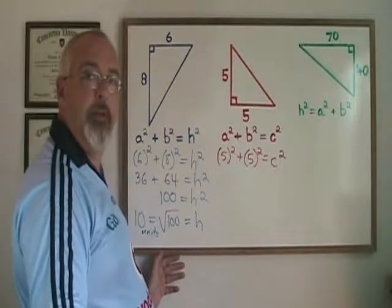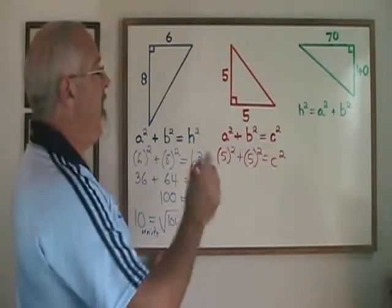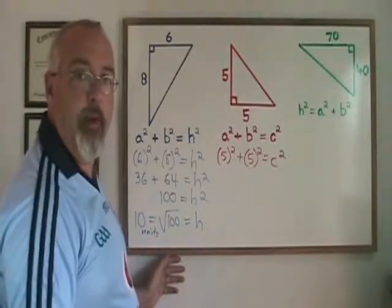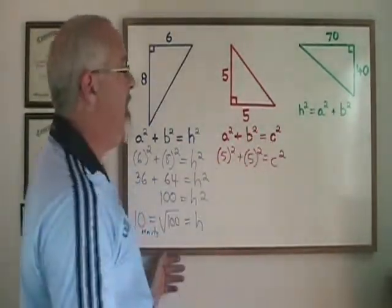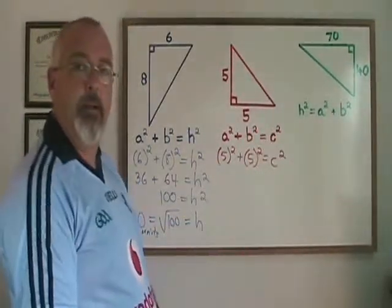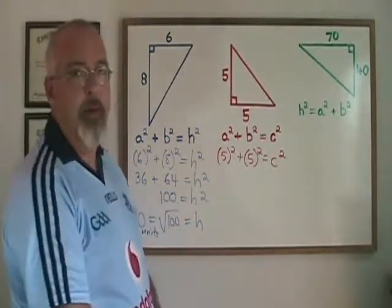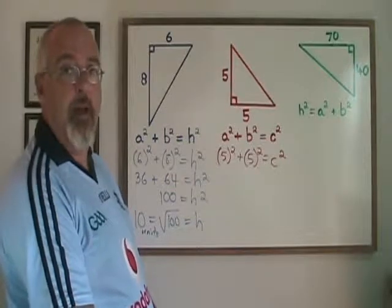So I get five squared plus five squared is equal to c squared. Notice that in this case, instead of using an h for the length of my hypotenuse, I am using the letter c. I actually prefer this because of the confusion that can arise when you have h, which sometimes means hypotenuse and sometimes means height.